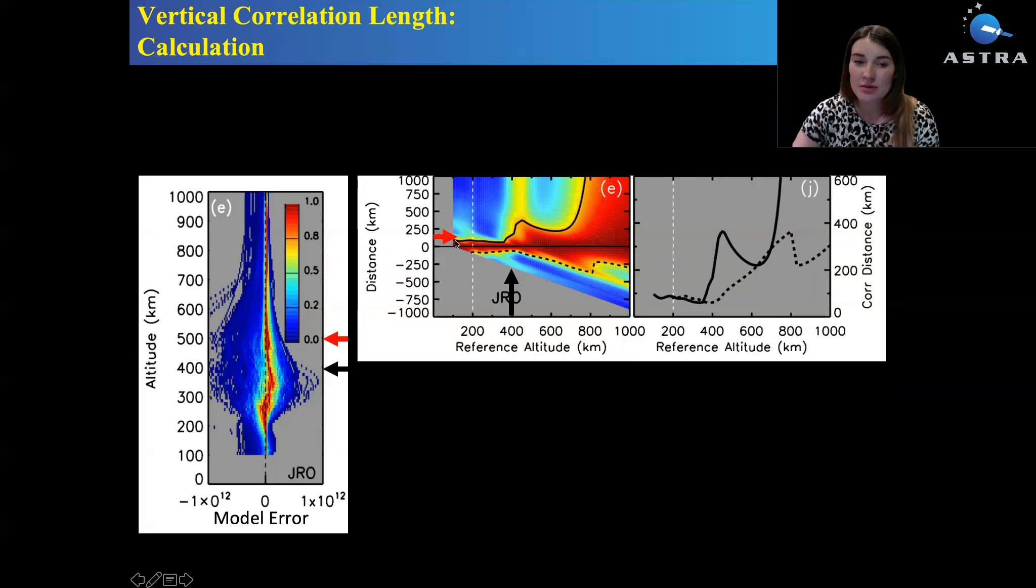Then I found the positions where the correlations are equal to 0.7. These positions above the reference points are shown with solid line and with dashed line below. I would call them the correlation distances and I would find the correlation distance as a function of reference altitude shown in this last panel.